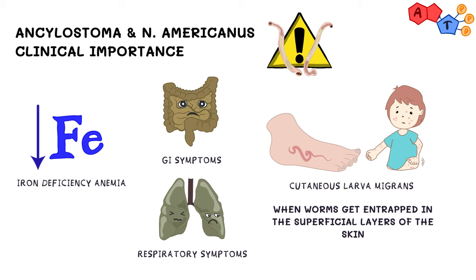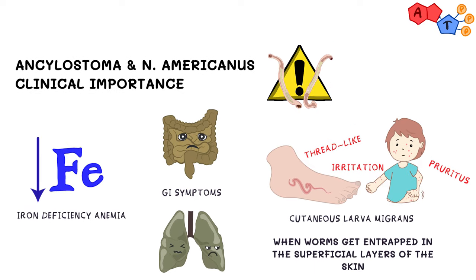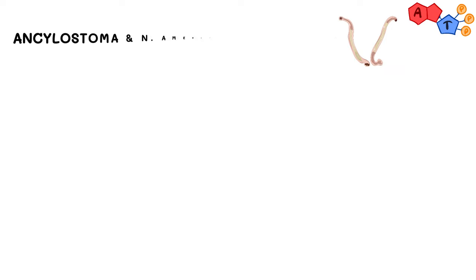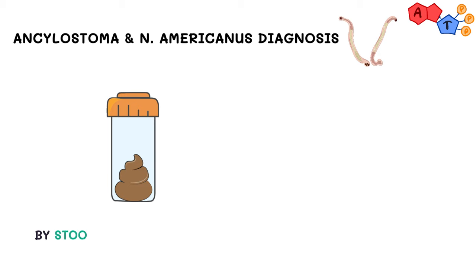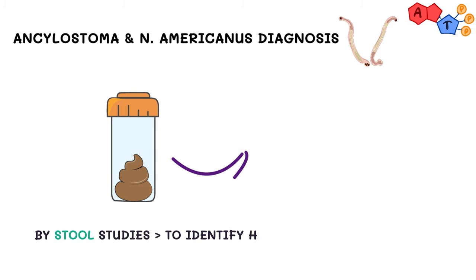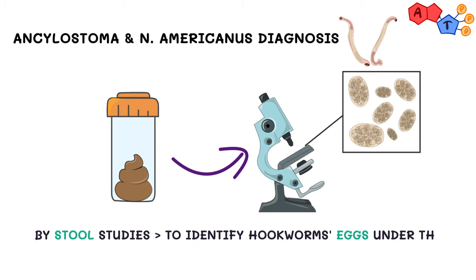Cutaneous larva migrans usually presents on the foot and is characterized by a thread-like lesion, irritation, and pruritus. Patients can also have GI or respiratory symptoms. For diagnosis, stool studies are used again to help visualize eggs under microscopy.